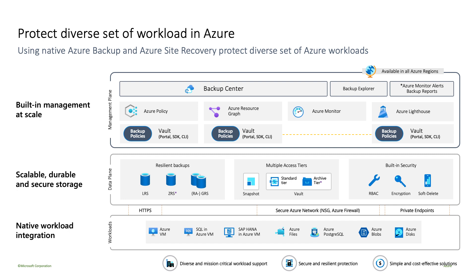We have the snapshot tier, which is used when we snapshot the databases, and the standard tier where we store regular backups. This standard tier is completely isolated from customer tenants, and we provide additional security elements. We also introduce the archival tier for long-term retention. In terms of availability levels, we have LRS, ZRS, and RAGRS, and we also provide built-in security.